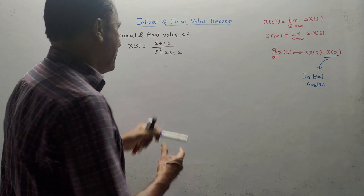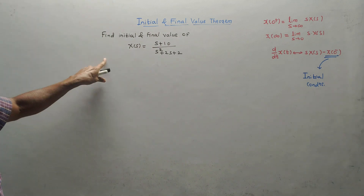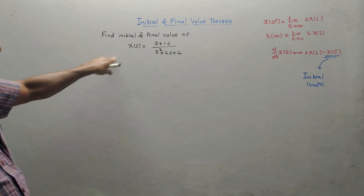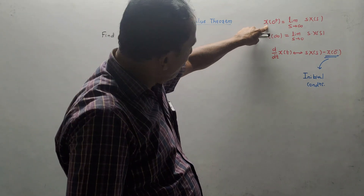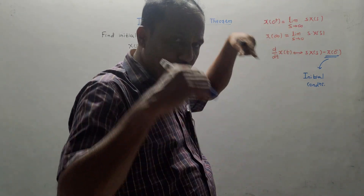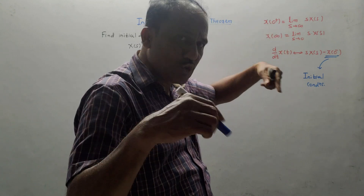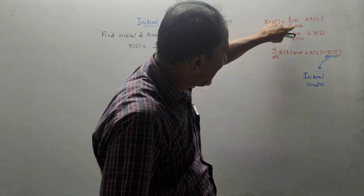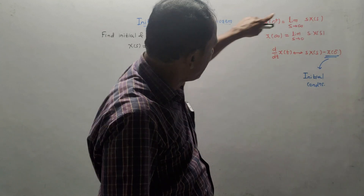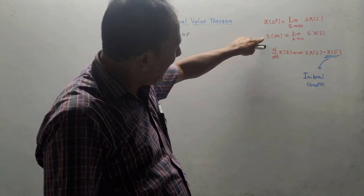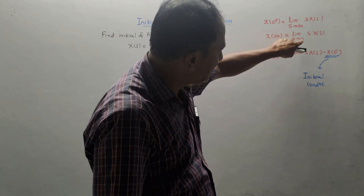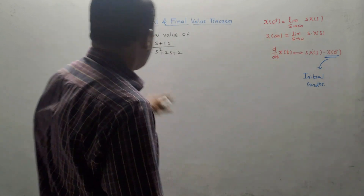That is also called final value. From the exam point of view, numericals are important. So to calculate initial value, the formula is: x(0⁺) equals the limit as s tends to infinity of s·X(s). Final value is denoted by x(∞), which is the limit as s tends to 0 of s·X(s).